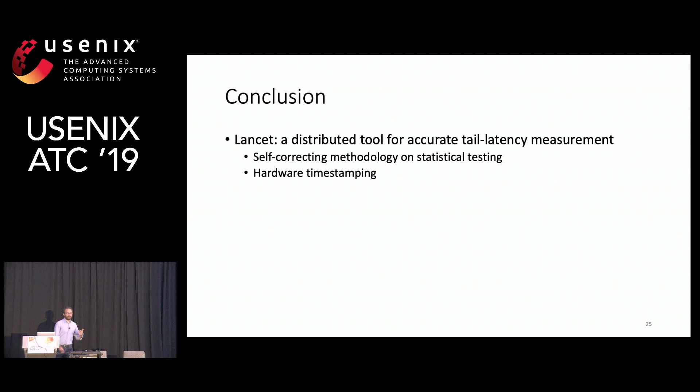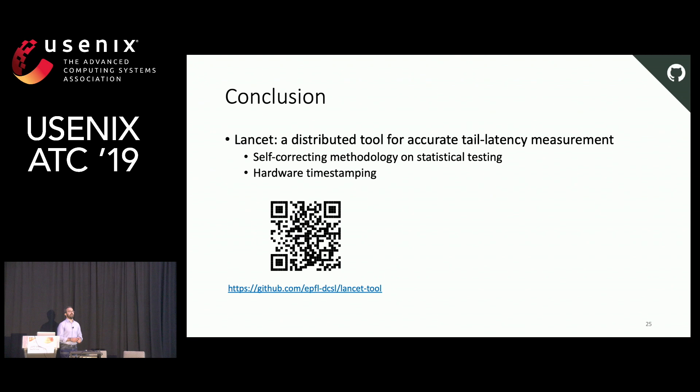To conclude, I presented Lancet, a distributed tool to accurately measure open-loop tail latency. It depends on hardware timestamping for accuracy and implements a robust measuring methodology based on statistical testing to drive the experiment. Lancet is open source and we highly encourage you to fork it, use it, and help us make it better. Thank you — I'm ready to take questions.